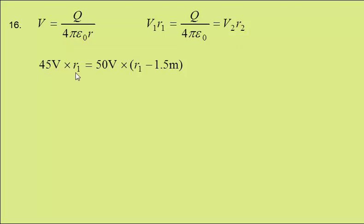So 45 volts times distance 1 equals 50 volts times distance 1 minus 1.5 metres.